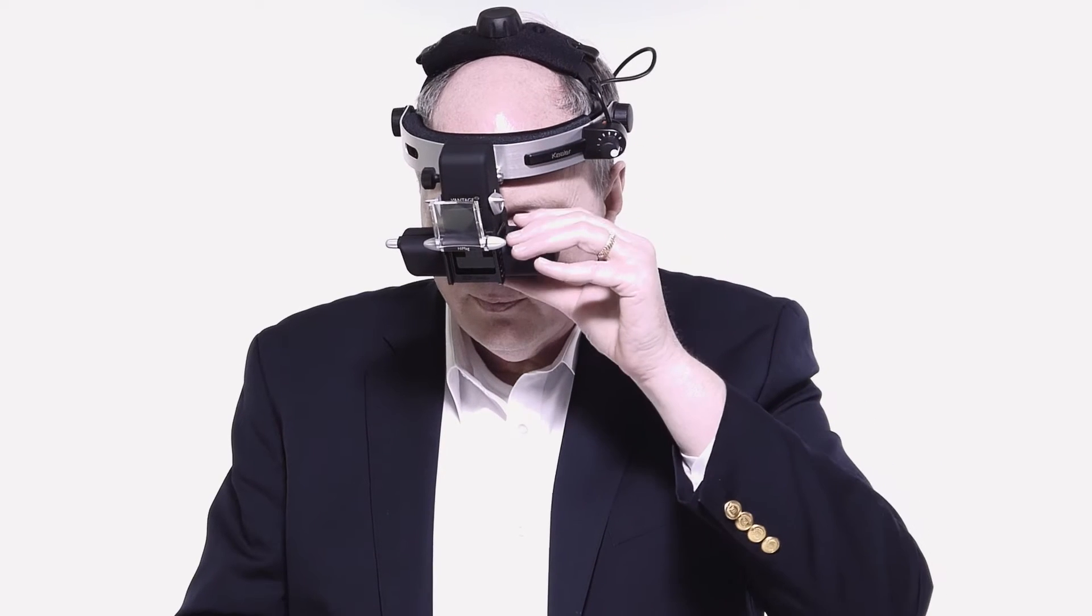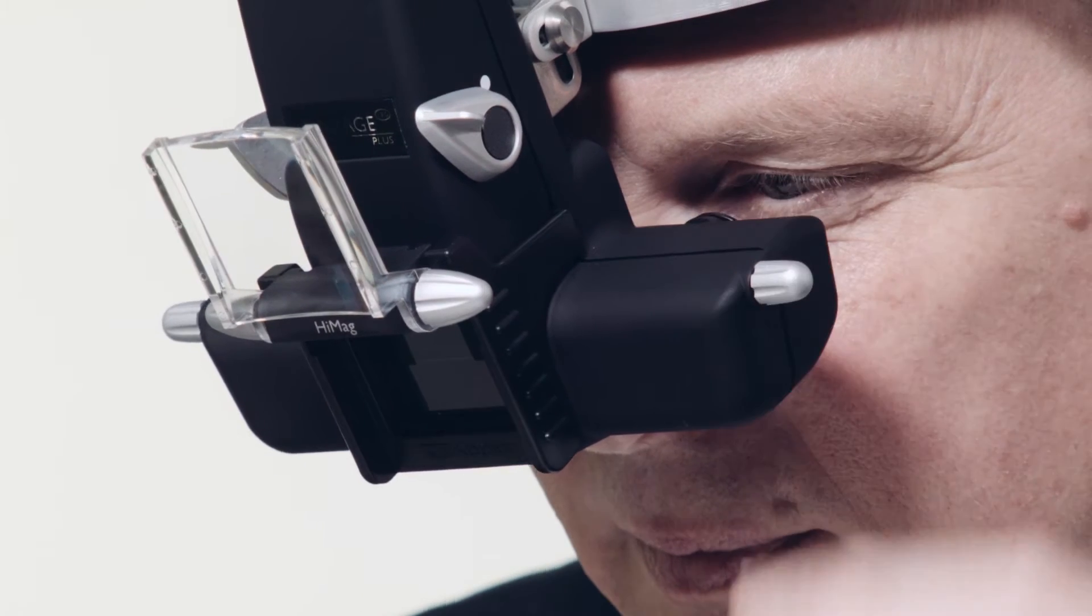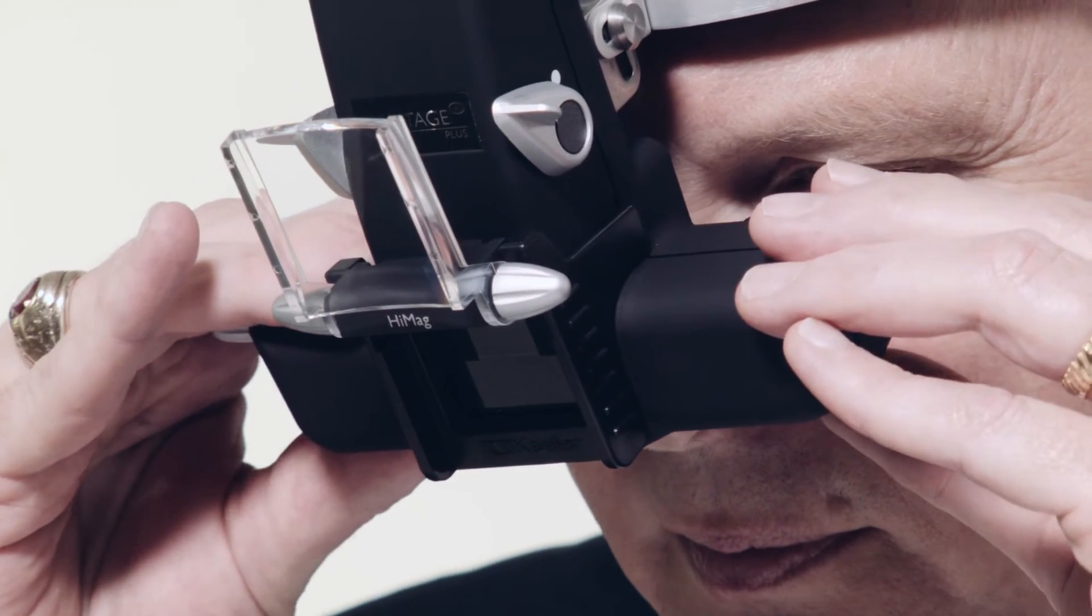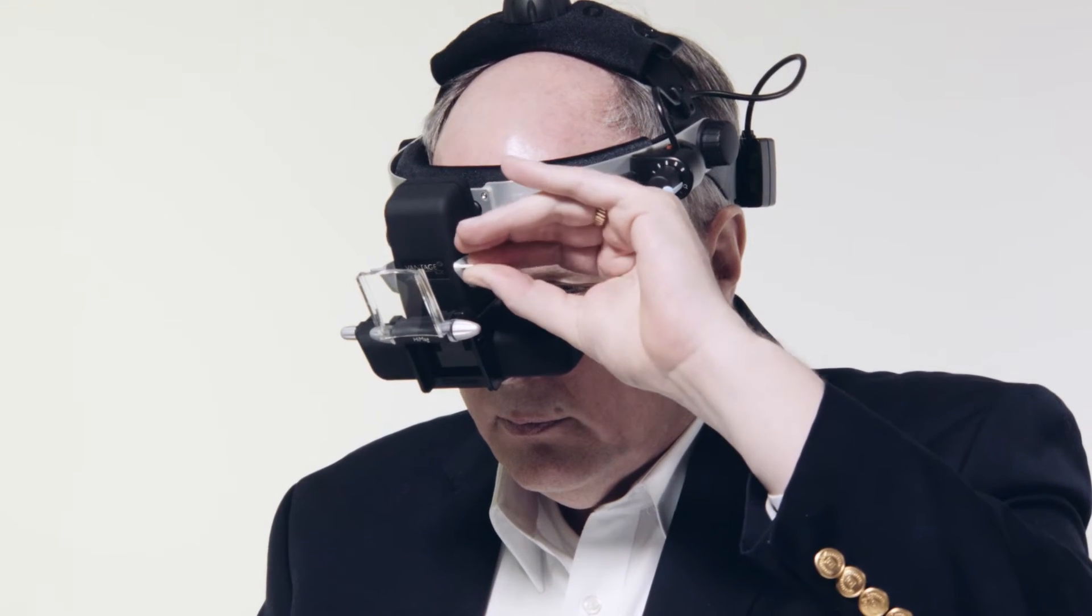Because eyes are dissociated, pupillary distance, or PD, must be set for each eye. Simply slide one ocular at a time and make sure the image is fused. The Vantage Plus features three aperture size options.